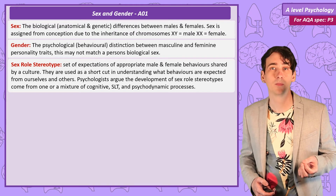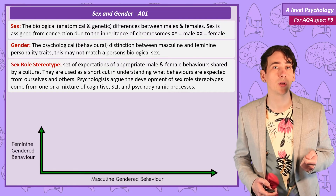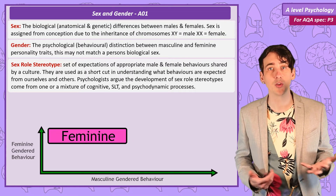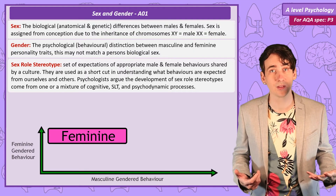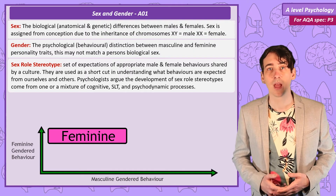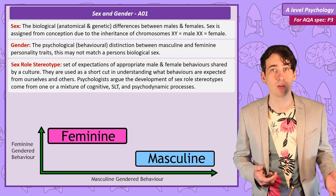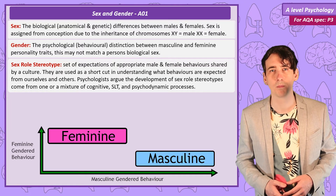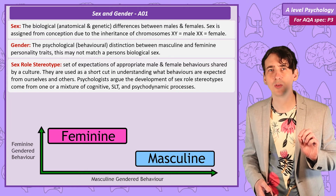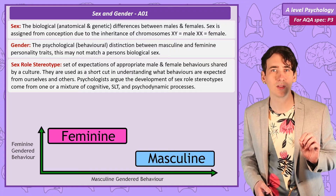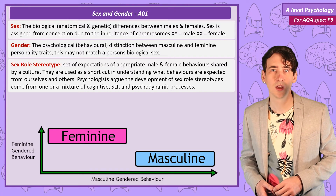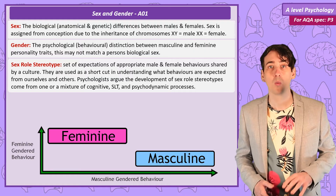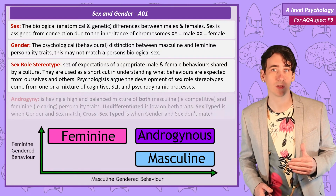When classifying someone's gender we would argue that someone is feminine if they have a large number, and strongly expressed, feminine traits. And masculine if they have a high level of masculine traits. Simple so far. But what if someone has high levels of masculine and feminine traits, but there is a balance between the two? Well we would call those people androgynous.